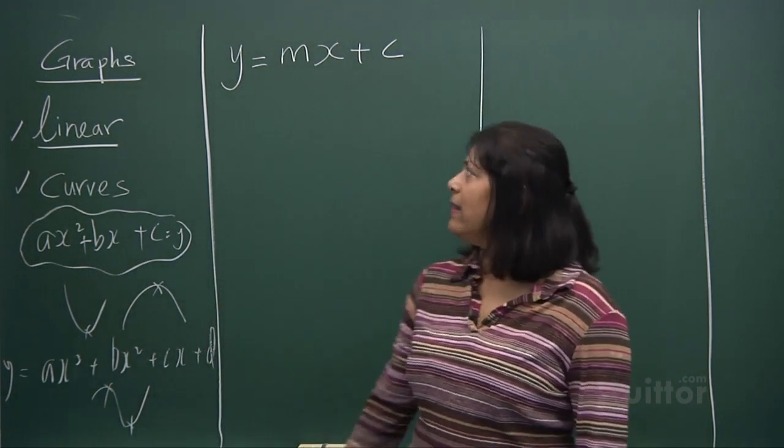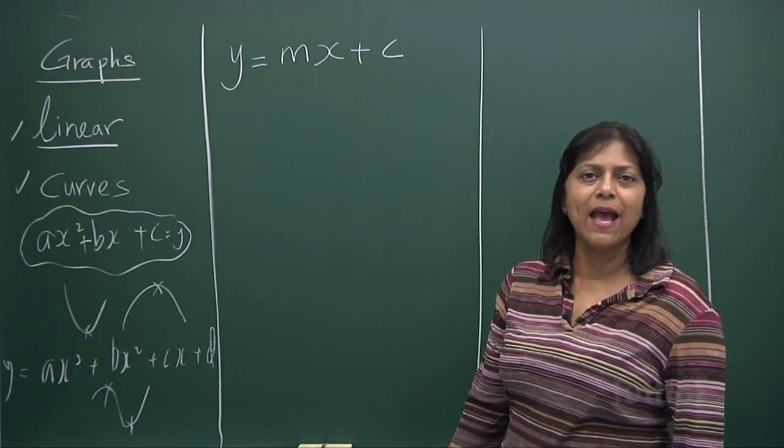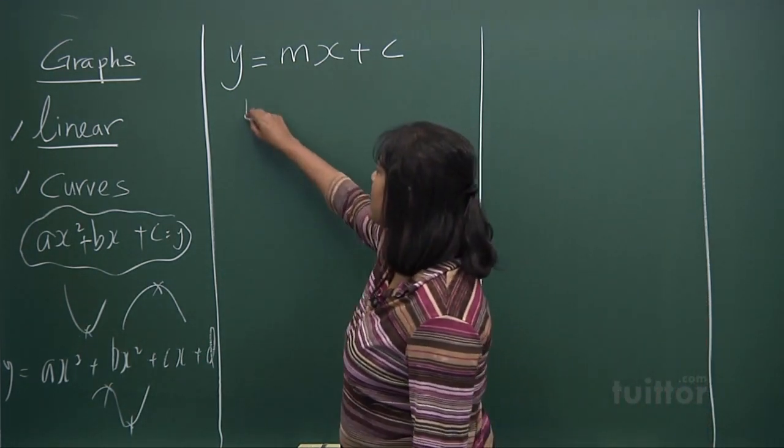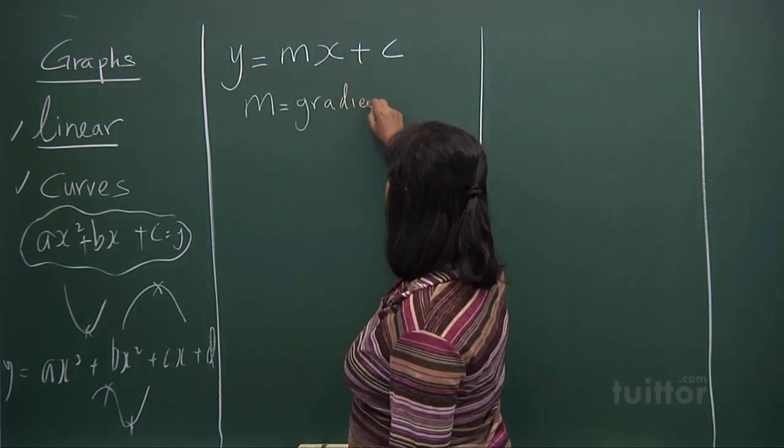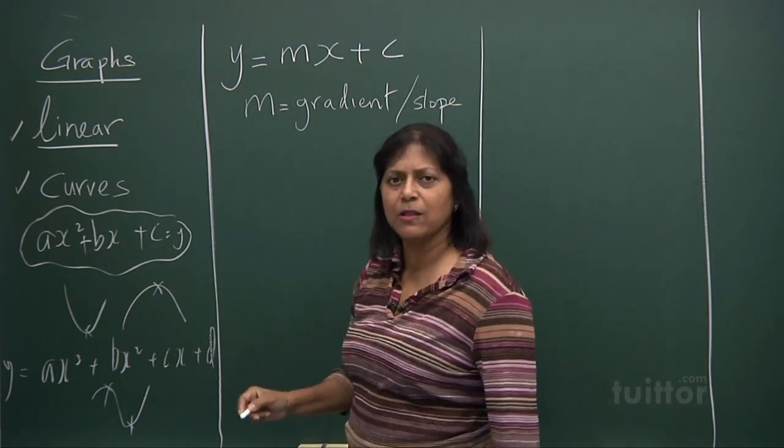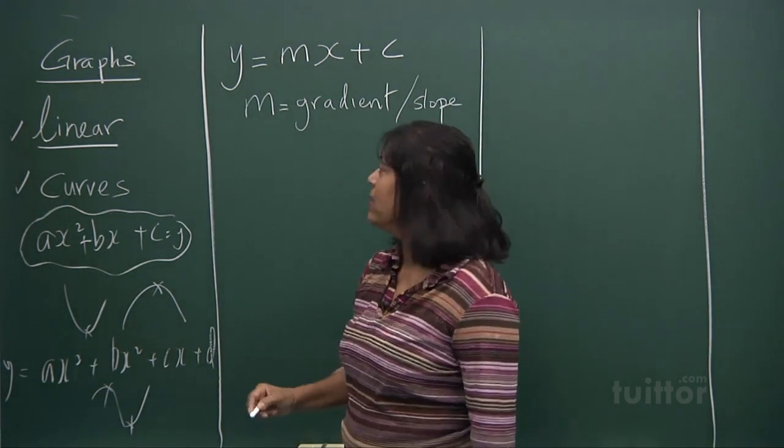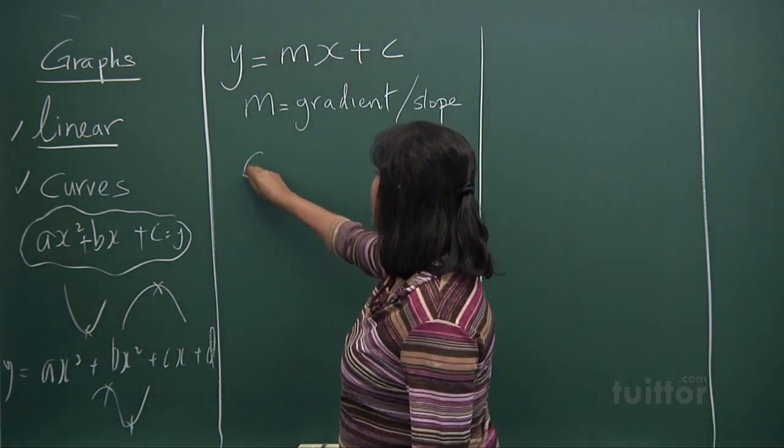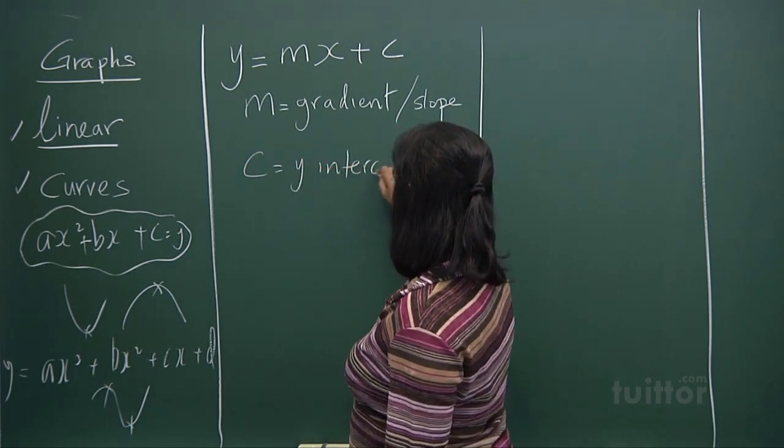Now let's look at linear: y = mx + c. What does m stand for? m is called the gradient, the slope. It's another word for gradient. And c is the y-intercept.